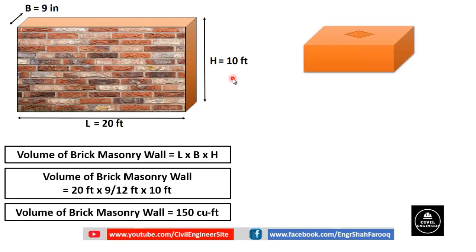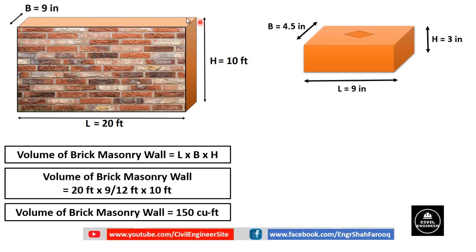Now we have to calculate the volume of a single brick. The dimensions of the brick depend upon the country. In our country, the most commonly used brick size is: length = 9 inches, height = 3 inches, and width = 4.5 inches.